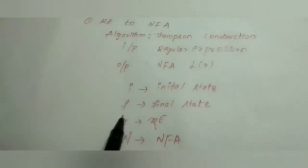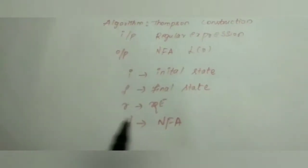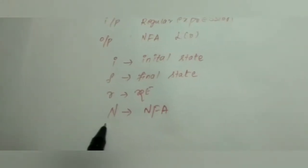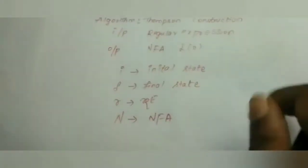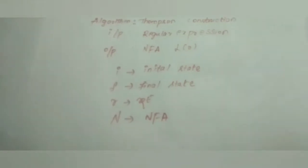Before we go into the Thompson constructions, we will assume some notation. For the initial state we will use 'i', for the final state we will use 'f', for the regular expression we use 'r', and to denote that it is an NFA we will use 'N'.